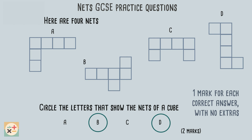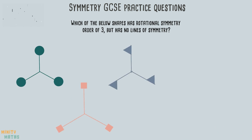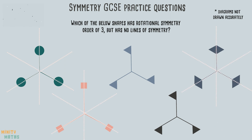For this question we are given two statements which must be true about the shape: the order of rotational symmetry must be three and there must be no lines of symmetry. Let's first concentrate on the lines of symmetry for each shape — this will help us to quickly rule out the shapes which cannot possibly be the answer. We can see that these three shapes have lines of symmetry, so we can rule these out.